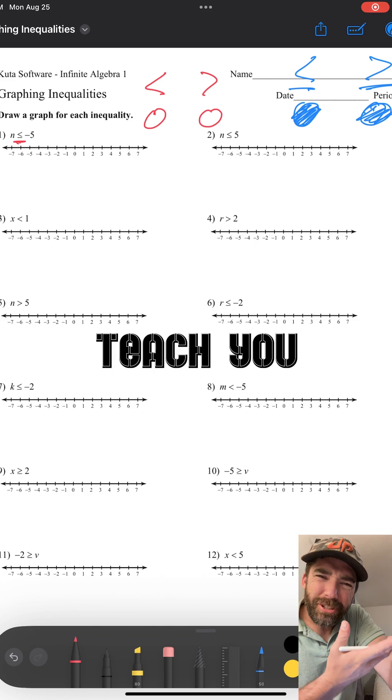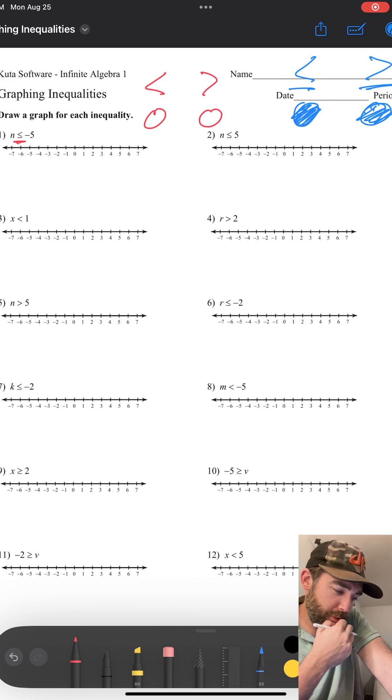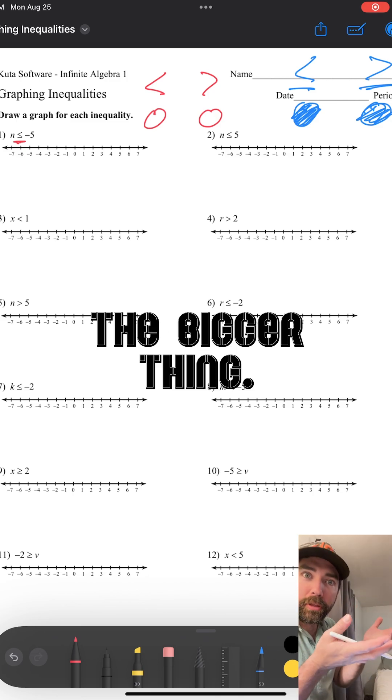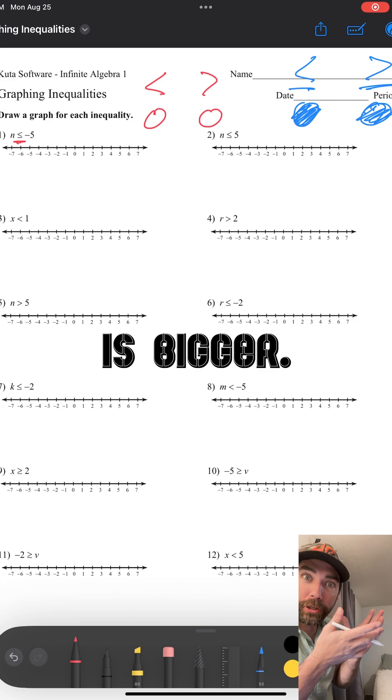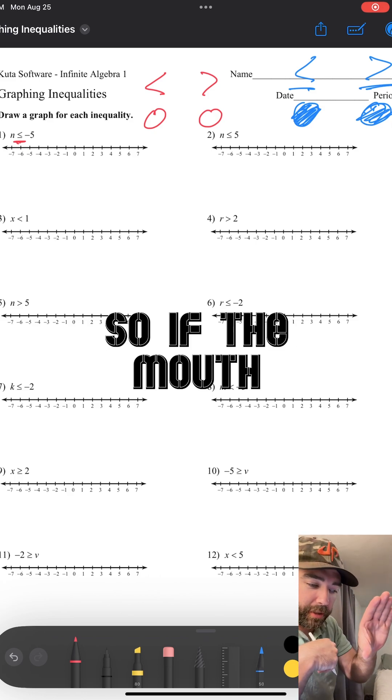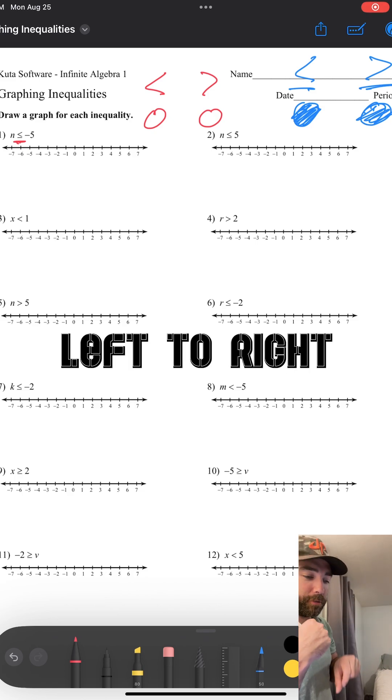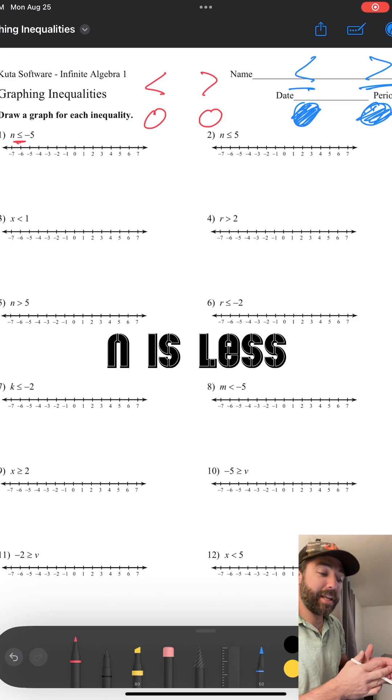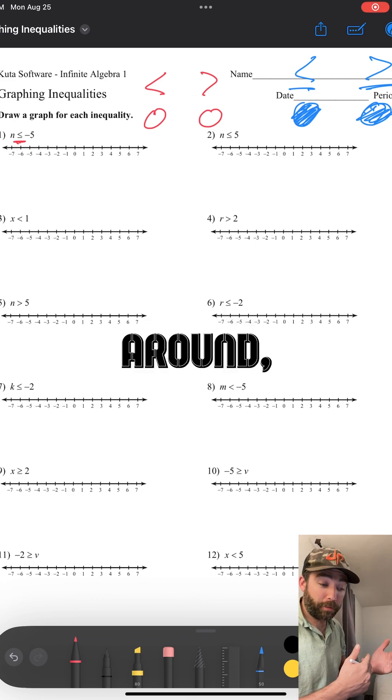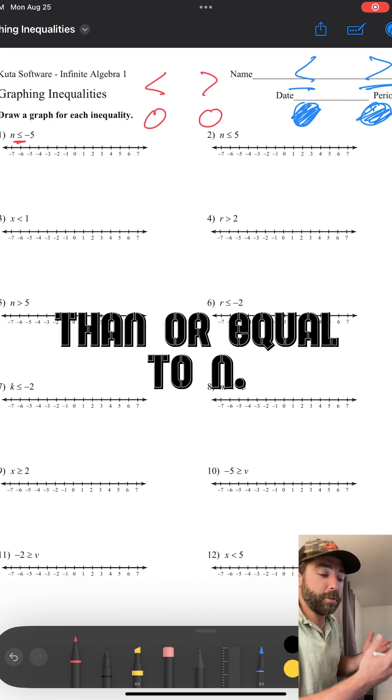Maybe I could teach you why that's less than. The alligator always eats the bigger thing because the alligator is bigger. So if the mouth is pointing this way, then we read it from left to right. N is less than negative five. If we were to read it the other way around, negative five is greater than or equal to N.